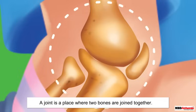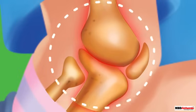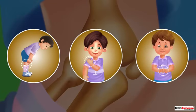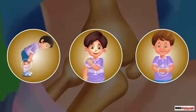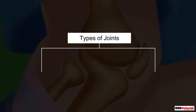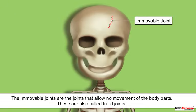A joint is actually a place where two bones are joined together. Press your hand against your knee, shoulder, or your fingers — you can feel your joints there. Not all joints allow movements. On the basis of whether the joint helps in the movement or not, these joints can be categorized into two types: immovable and movable.